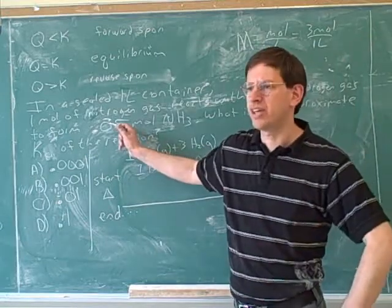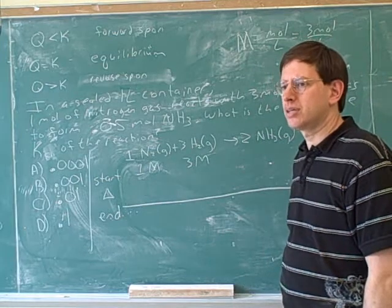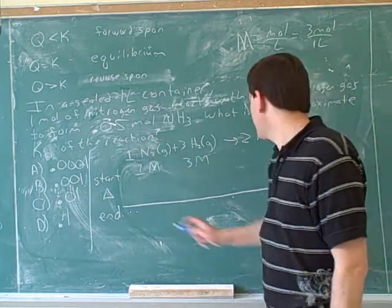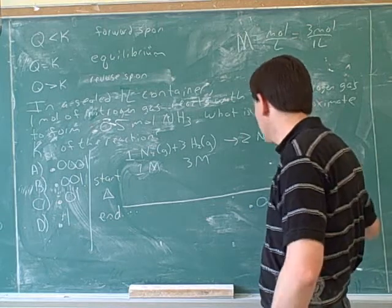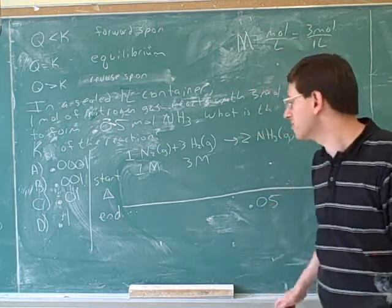How about the 0.05 number? Where does that go? The end. Yeah, the best place to put this is down here. This is the final concentration of the ammonia. Okay, very good.